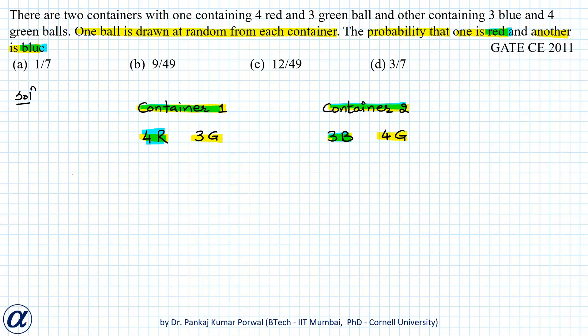So probability of getting one red and one blue ball will be probability of red intersection blue. Because the red ball and the blue ball are coming from different containers, they will be independent events, so probability of intersection can be written as product of the probabilities.